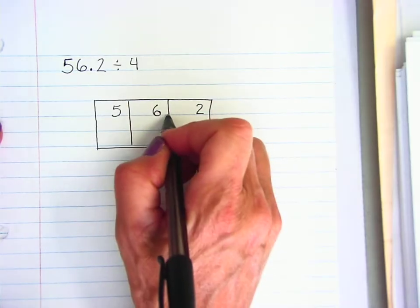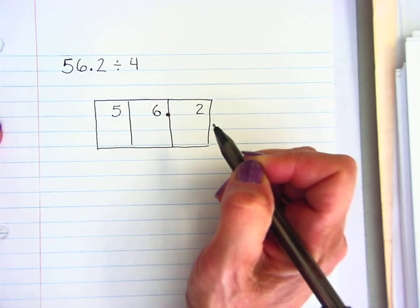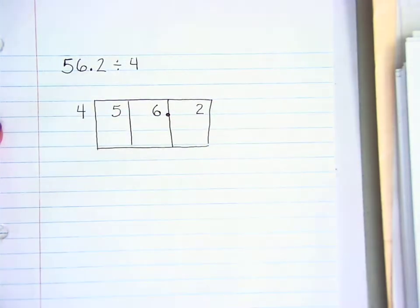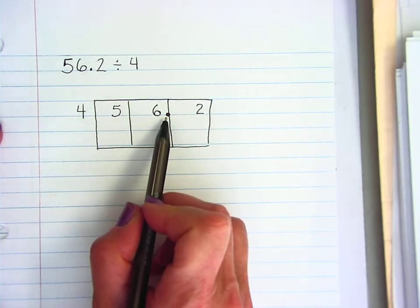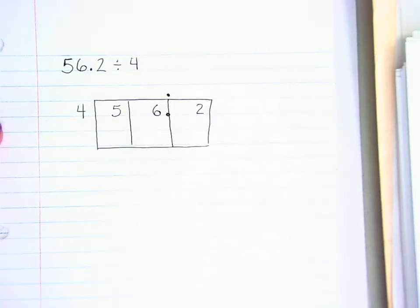Now this has a decimal point so I need to put the decimal point in that box right at the edge of that line and I'm dividing by 4 so that goes outside the box. The very first thing I'm going to do when I'm dividing a decimal is bring that decimal point up into my answer.